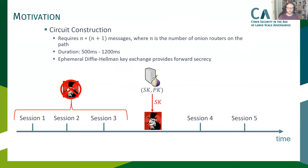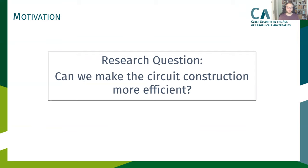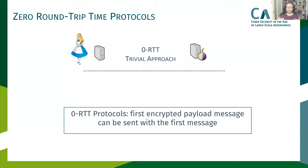So our research question was: can we make this circuit construction process more efficient? Can we get rid of this massive message overhead but still provide unlinkability and forward secrecy? Our basic approach for this is to use zero round-trip time protocols. A zero round-trip time protocol, or short zero RTT protocol, gives Alice the ability to send encrypted payload within the first message to the Onion Router. A trivial approach to achieve the zero RTT property is to use public key encryption.